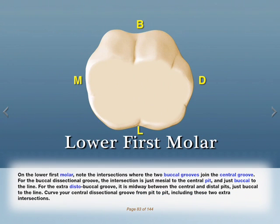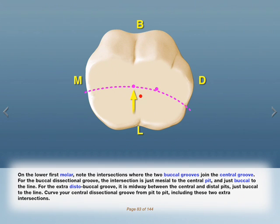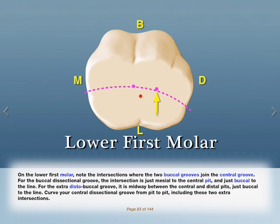On the lower first molar, note the intersections where the two buccal grooves join the central groove. For the buccal directional groove, the intersection is just mesial to the central pit, just buccal to the line. For the extra disto-buccal groove, it is midway between the central and distal pits, just buccal to the line. Curve your central directional groove from pit to pit, including these two extra intersections.